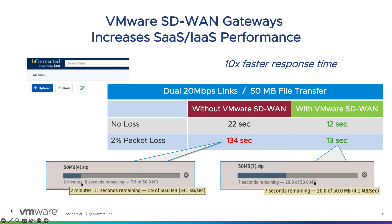Now if you introduce packet loss — because we can fix for packet loss — you see that there is no loss to the throughput and transfer speed. Whereas in the other situation without VeloCloud, you actually see a severe degradation of the transfer. I always like to show this because it's a great example of both DMPO as well as our cloud gateways.